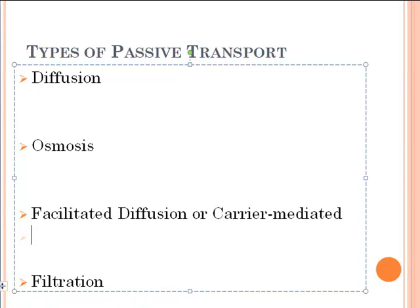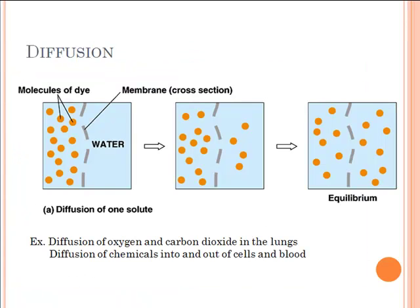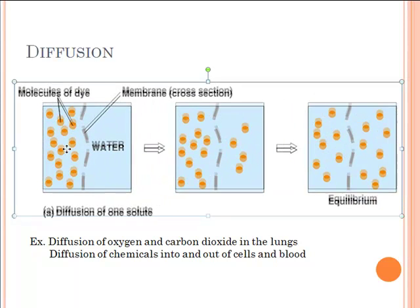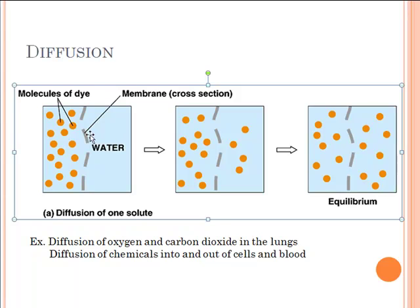Here's a quick example of diffusion: you can see molecules of dye on one side of the membrane in high concentration. As water moves around and slams into them, the dye molecules spread out to equal concentration. You can picture dropping colored dye into water, letting it sit, and coming back to find the water is uniformly colored as the dye spreads all the way around.